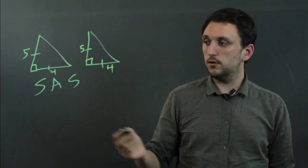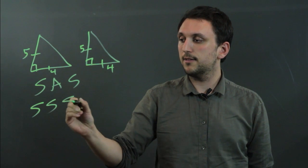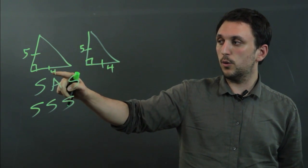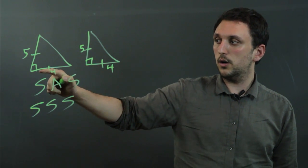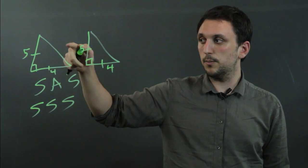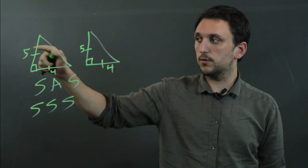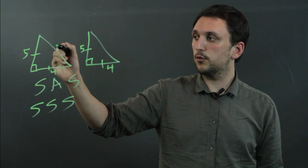Now another one we can do is side side side meaning let's say we know this is 4, this is 5, well because it's a 90 degree triangle we can do the Pythagorean theorem. So 4 squared 16 plus 25, this would be root 41.